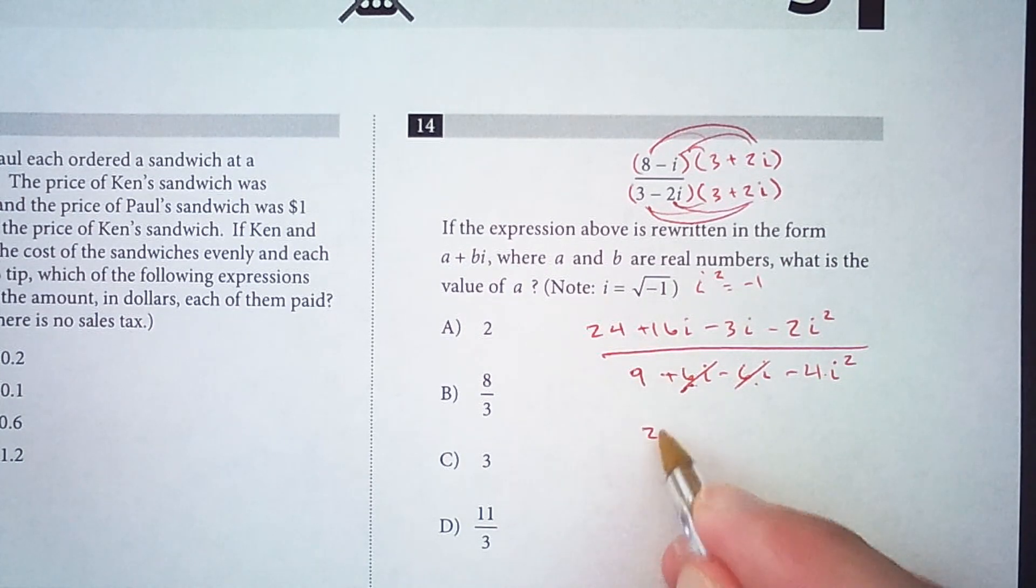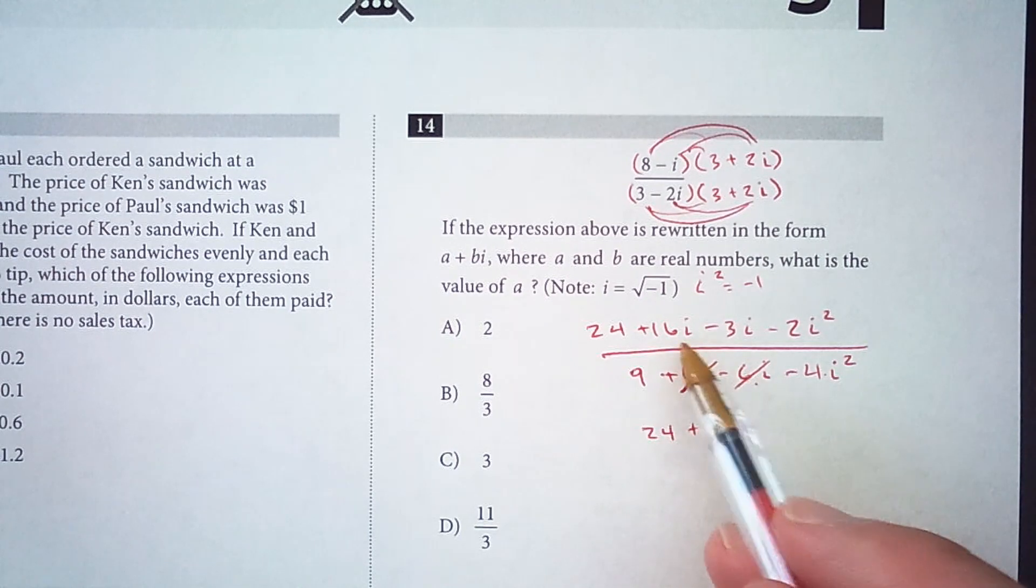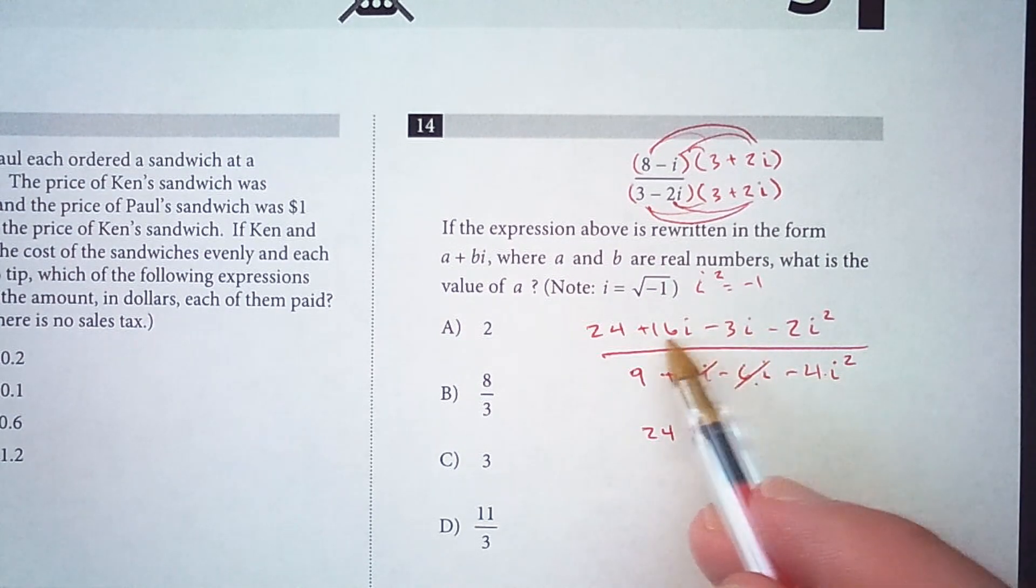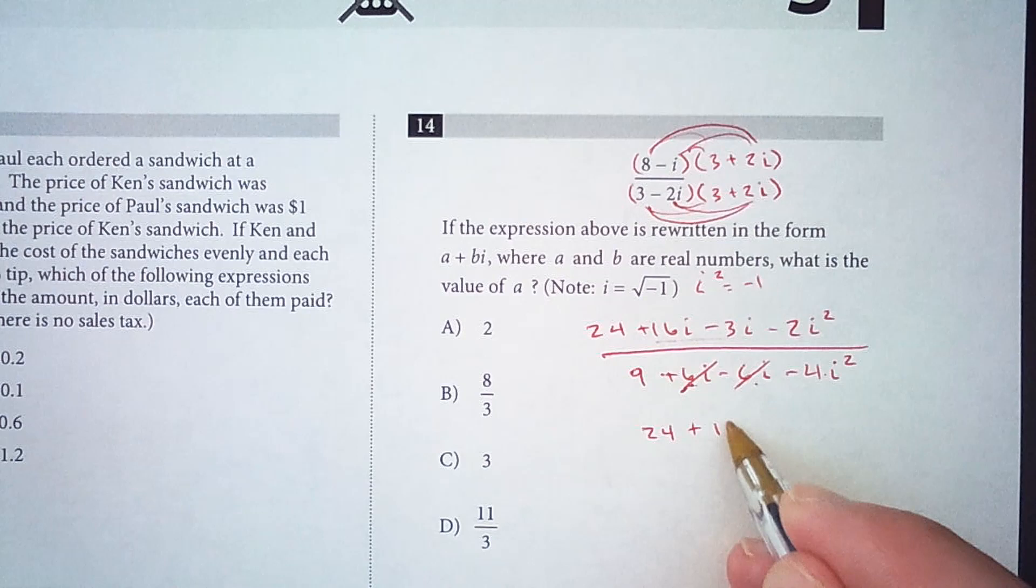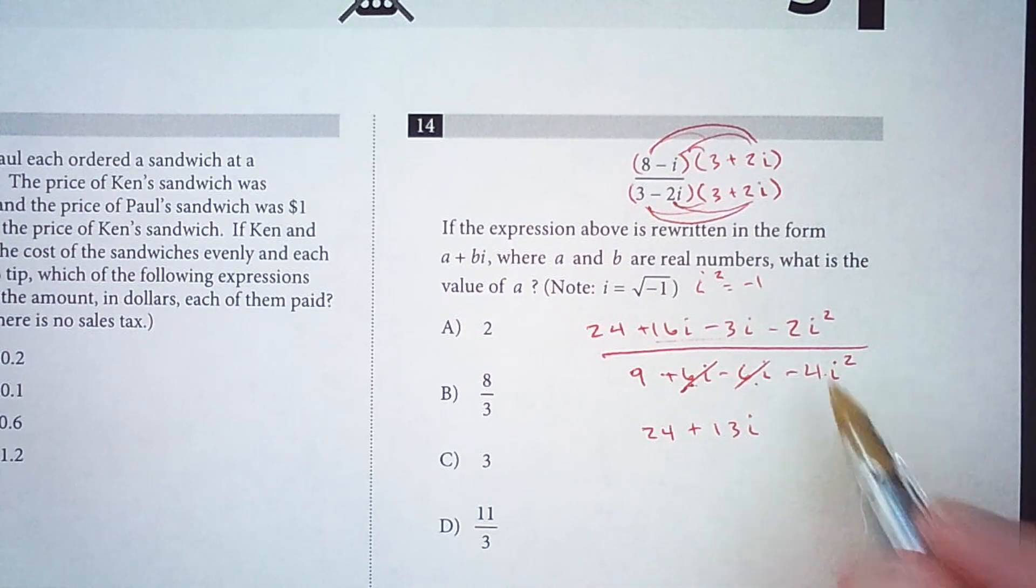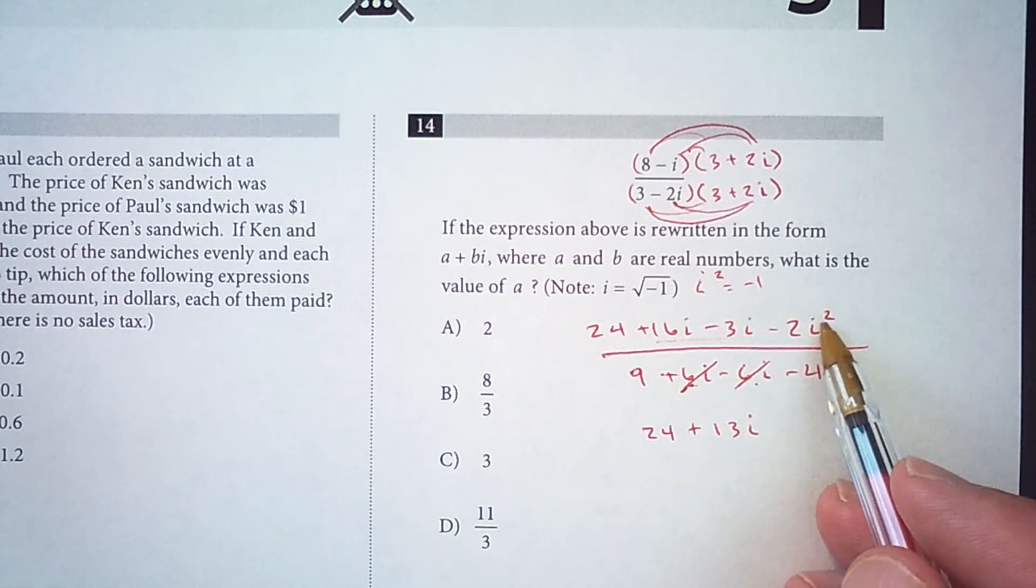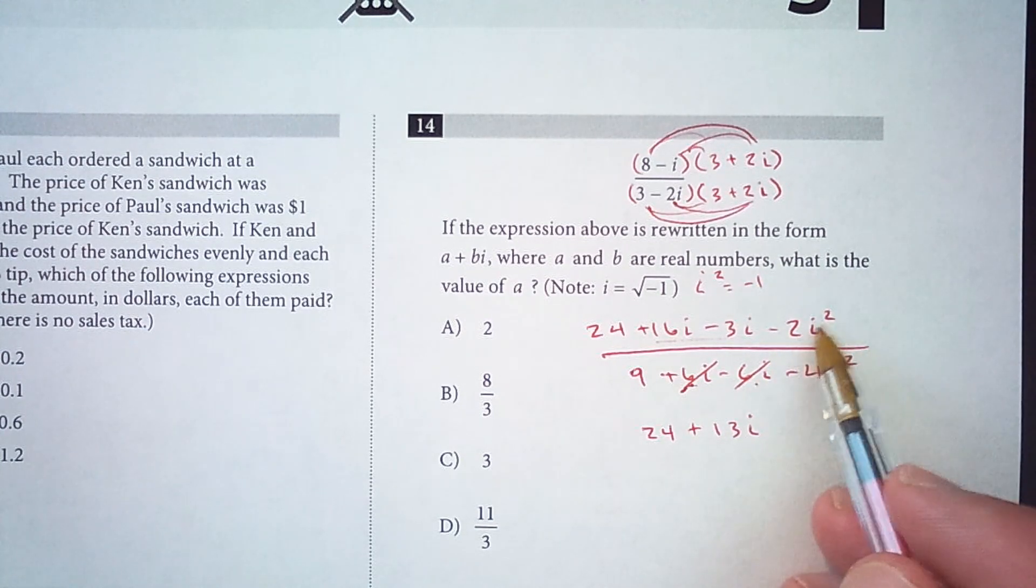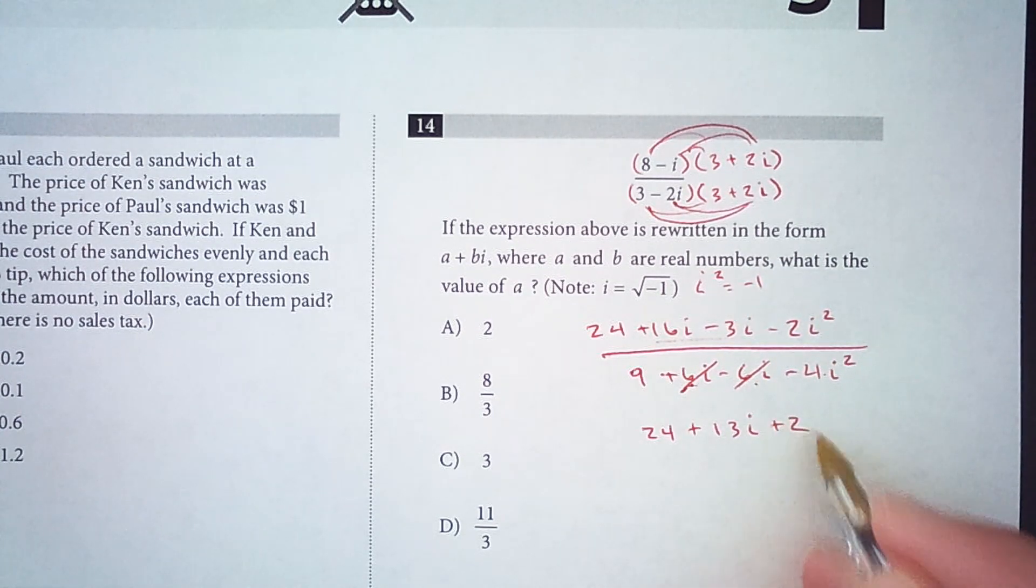We have 24 plus, then we have 16i minus 3i, so there's like terms, that's 13i. Then we have negative 2 times i squared, and i squared is negative 1, so it's really negative 2 times negative 1, which is positive 2.